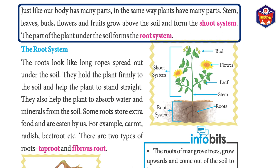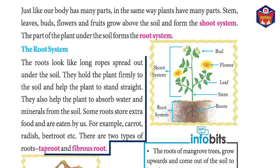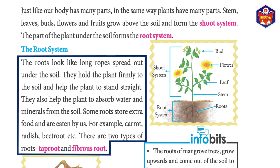The root system — roots look like long ropes spread out under the soil. They hold the plant firmly to the soil and help the plant to stand straight. They also help the plant to absorb water and minerals from the soil. Some roots store extra food and are eaten by us — for example, carrot, radish, and beetroot.